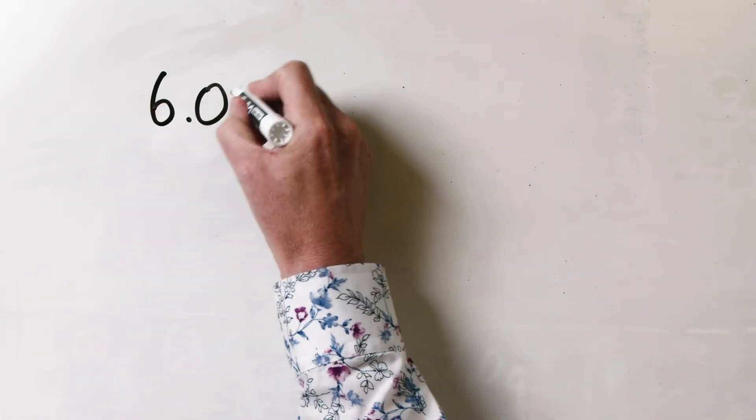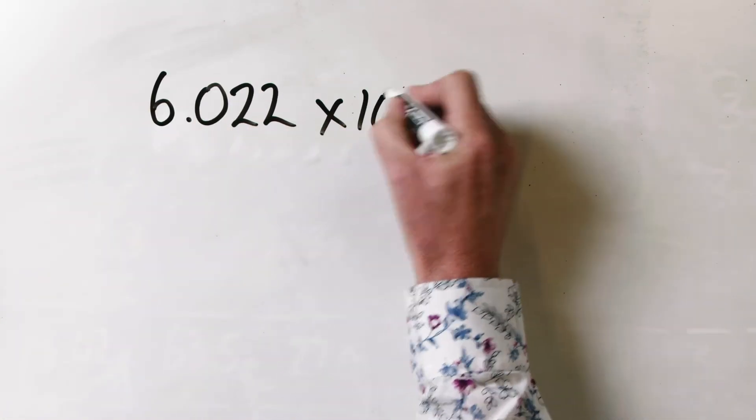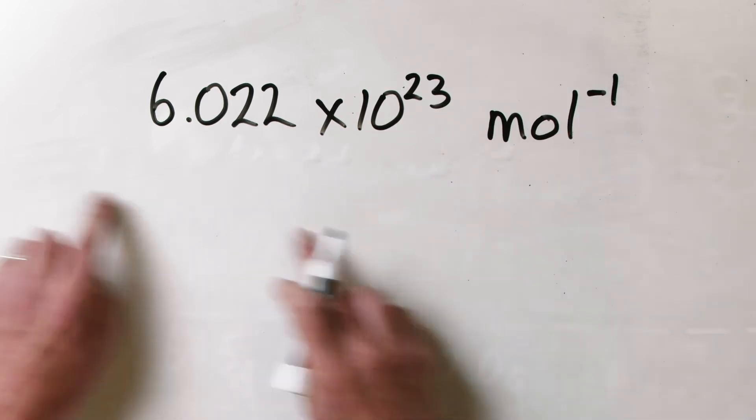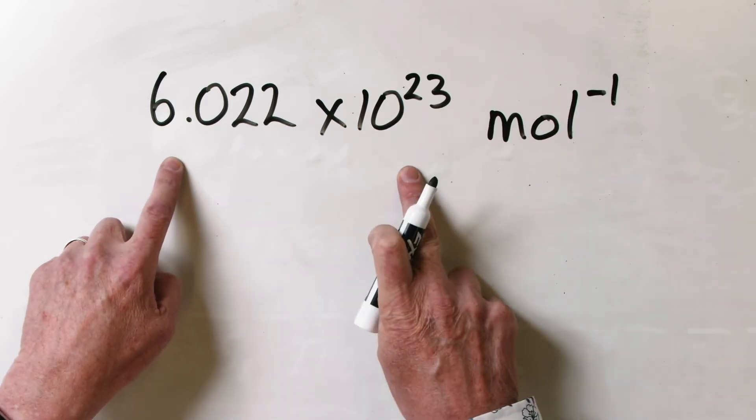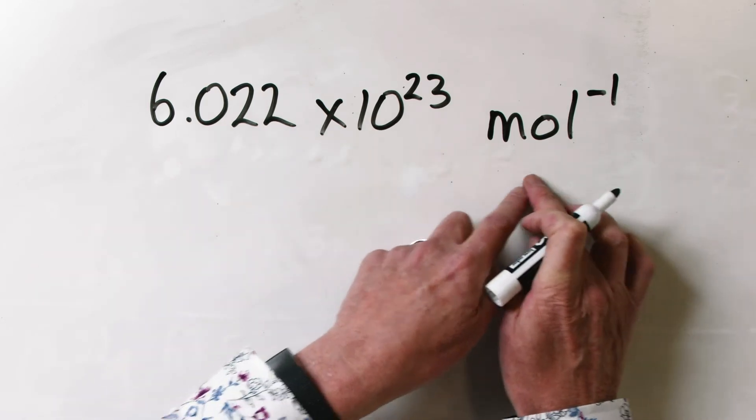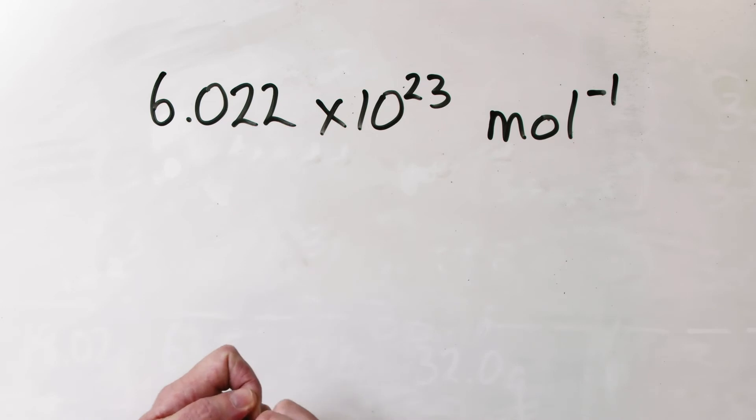And that's a mole, hopefully, as I can best explain it. It's a really, really, really important chemical concept. And it simply boils down to a particular number — that particular number being 6.022 times 10 to the power of 23 per mole. 6.022 times 10 to the power of 23 anythings in one mole of that anything.